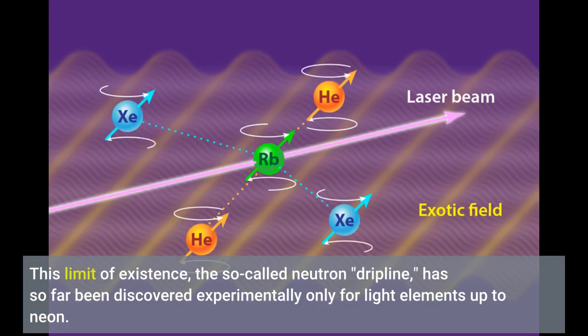This limit of existence, the so-called neutron dripline, has so far been discovered experimentally only for light elements up to neon.